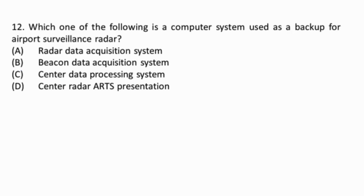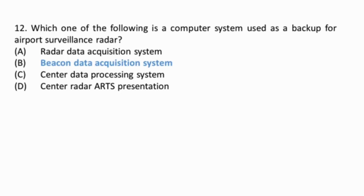Question 12: Which one of the following is a computer system used as a backup for airport surveillance radar? The answer is the Beacon Data Acquisition and Display System — a system for transmitting aircraft beacon information received by a secondary surveillance radar through telephone lines to a remote display. It includes a digitizer connected to the radar for preparing a serial file of data records containing position and identification information of beacons detected by each sweep of the radar.